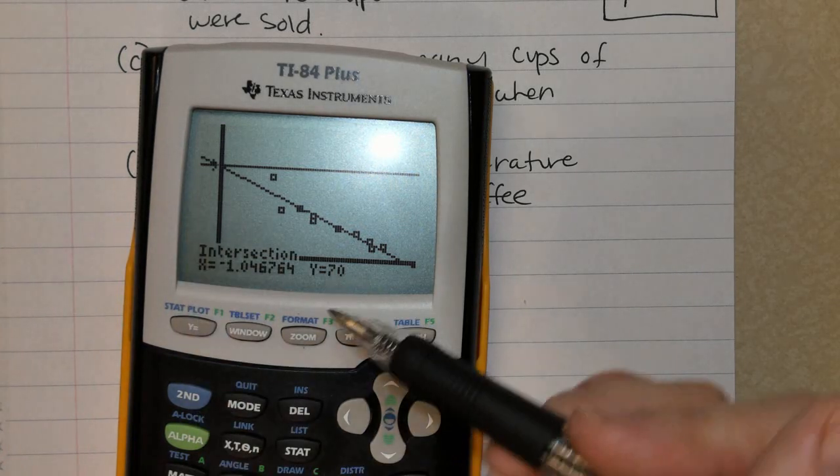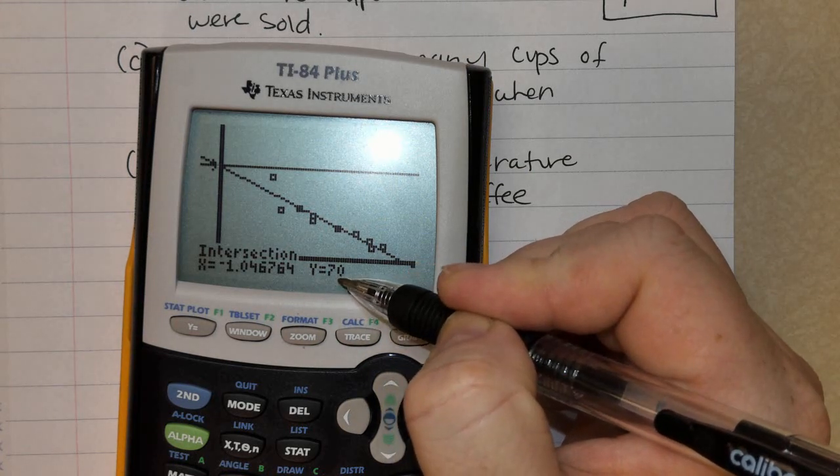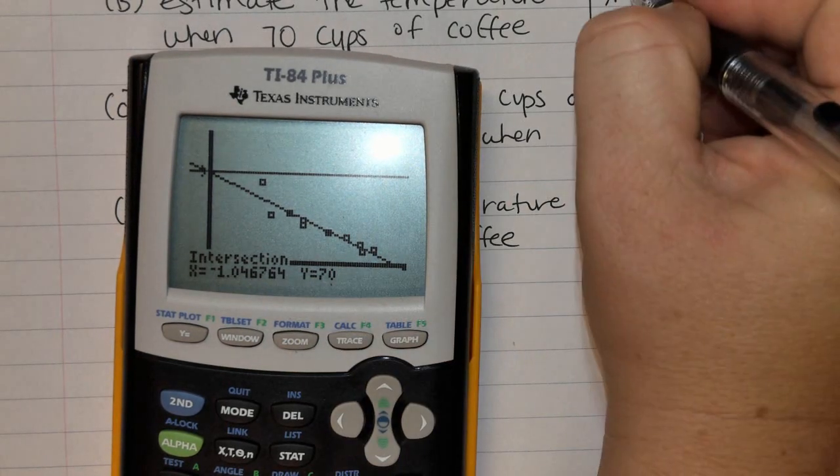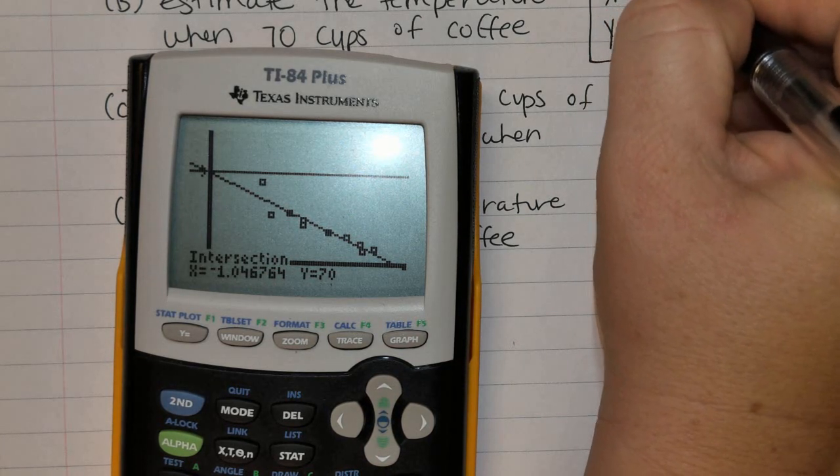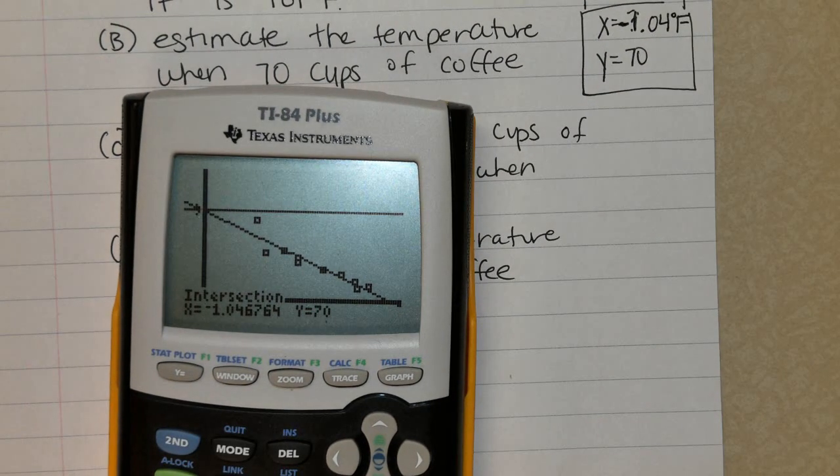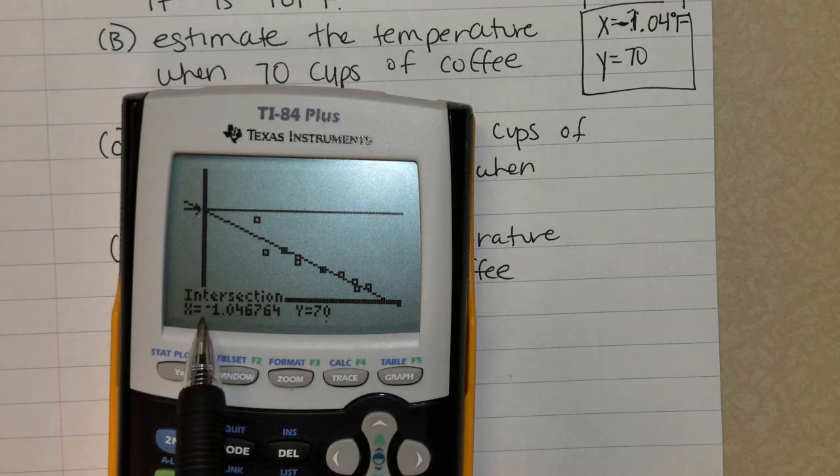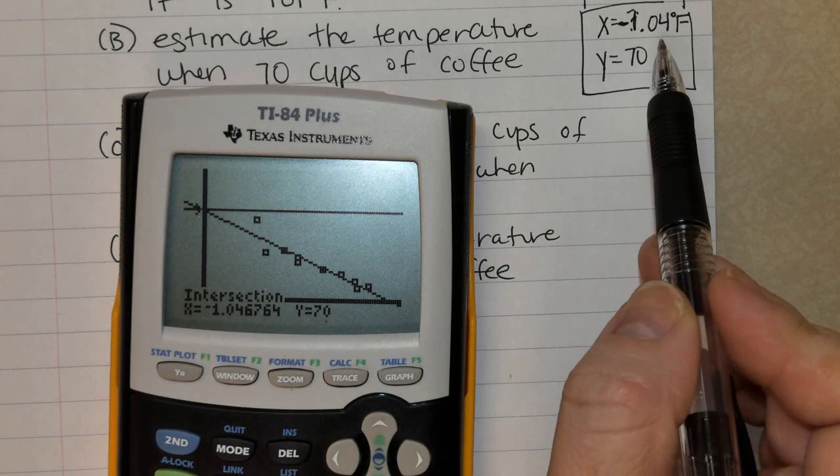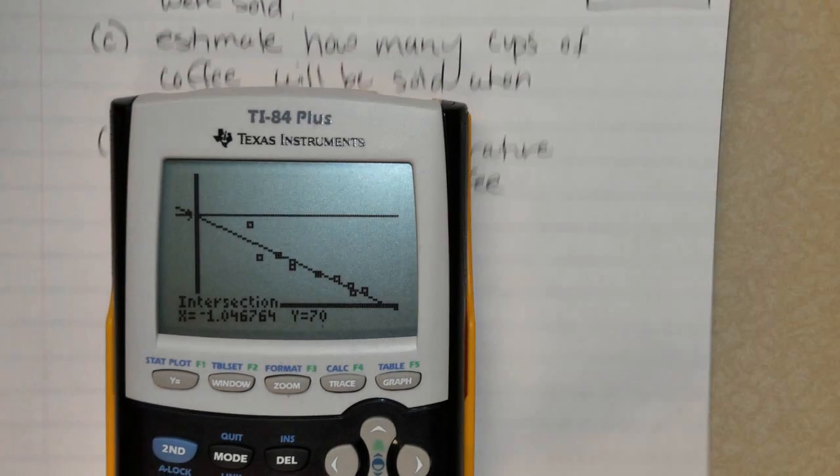What does this mean? It means when 70 cups of coffee were sold, we can predict that the temperature was approximately negative 1 degree Fahrenheit outside. When 70 cups of coffee were sold, we can predict the temperature was approximately negative 1 degrees Fahrenheit outside. Okay, let's go to part C.